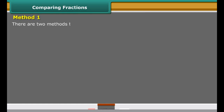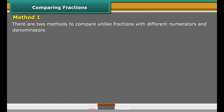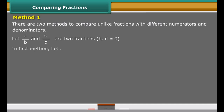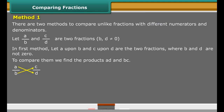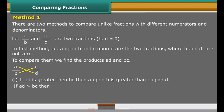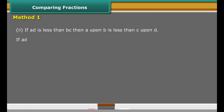Method 1: There are two methods to compare unlike fractions with different numerators and denominators. Let A/B and C/D be the two fractions where B and D are not equal to 0. To compare them, we find the products AD and BC. If AD is greater than BC, then A/B is greater than C/D. If AD is less than BC, then A/B is less than C/D.